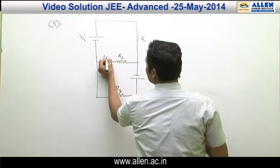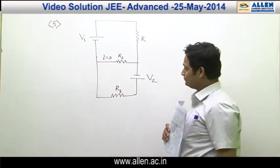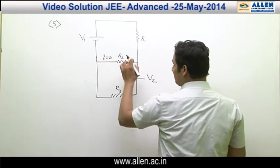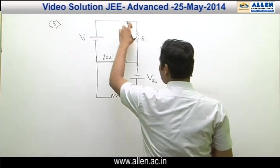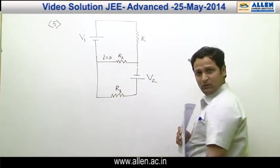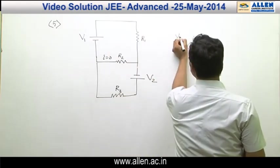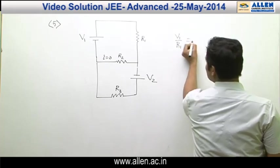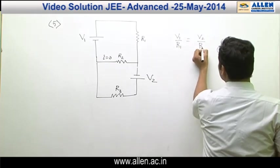Here current in R2 is 0. If current in R2 is 0, that means current in R1 and R3 must be equal. So current in R1 will be V1 divided by R1, that should be equal to V2 divided by R3.